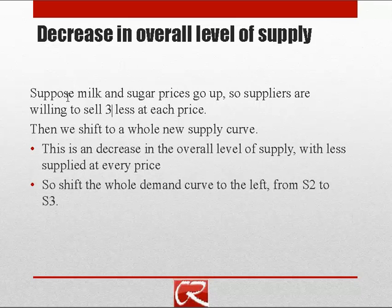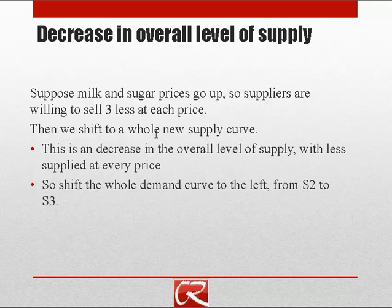A decrease in the overall level of supply could happen due to something like an increase in input prices. If there's an increase in input prices, it becomes less profitable to supply the good, so suppliers are less willing to supply it. Let's say milk and sugar prices go up and suppliers are willing to sell three less at every price — they want to reduce the amount they sell. So we're going to have new data in our supply schedule and that's going to shift us to a whole new supply curve with less supply at every price.